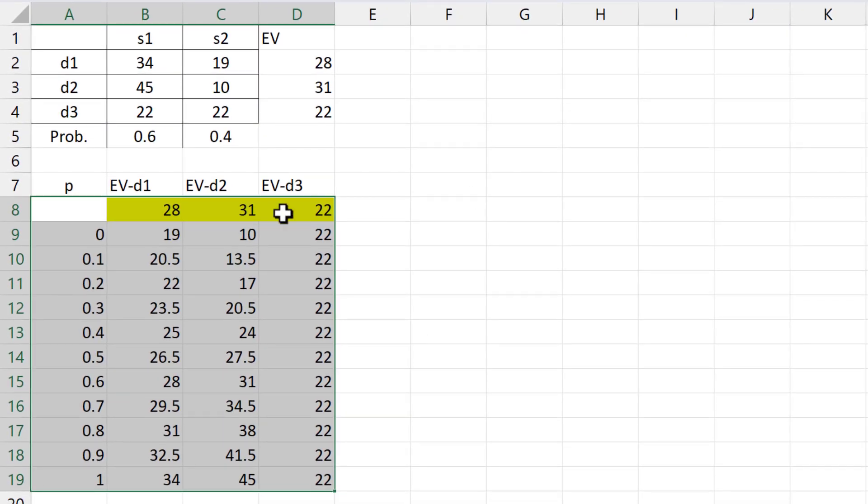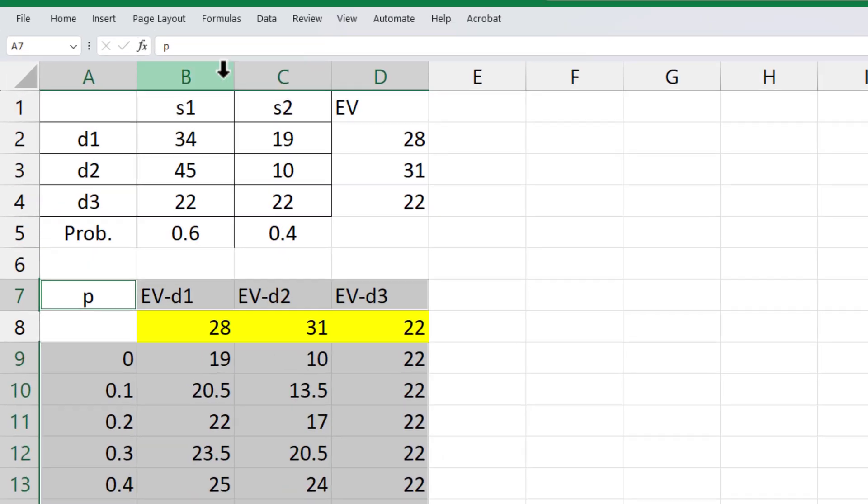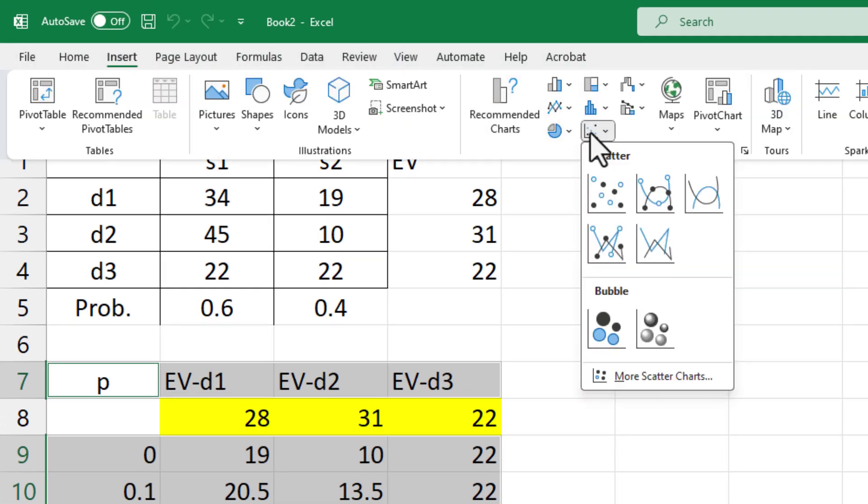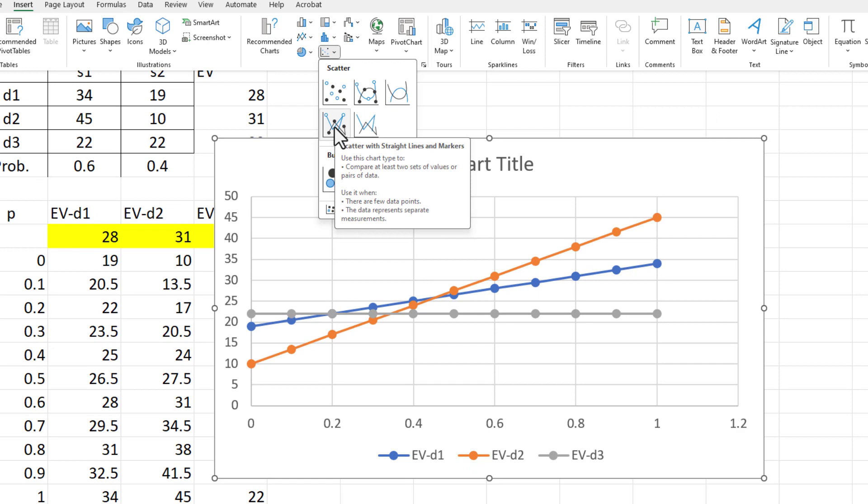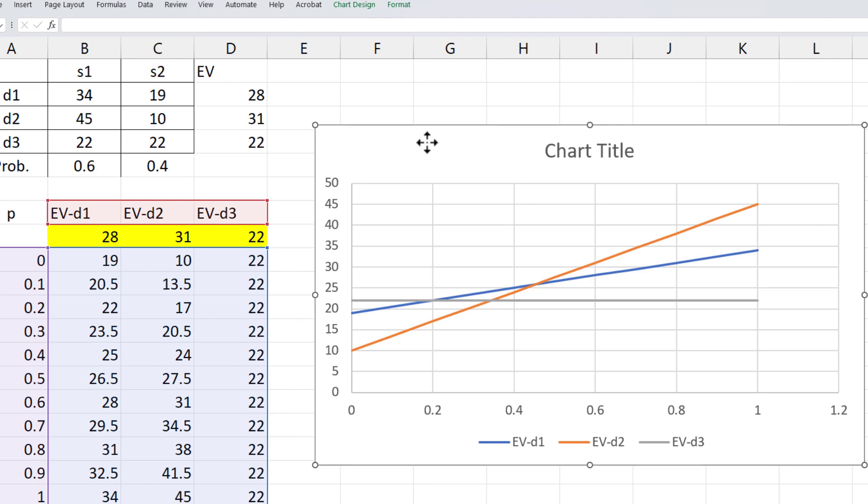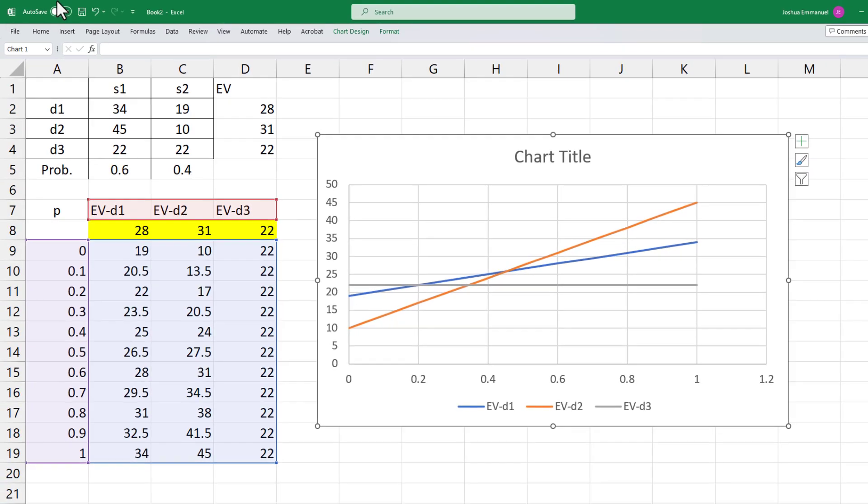To generate the graph, I'm going to select the probabilities together with the expected values. Hold the control key and select the titles. Then click insert. Scatter. I can choose the one with markers if I want, but I will select this one without markers. And that's the sensitivity chart. Thanks for watching.